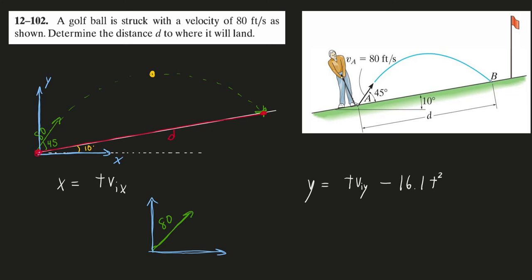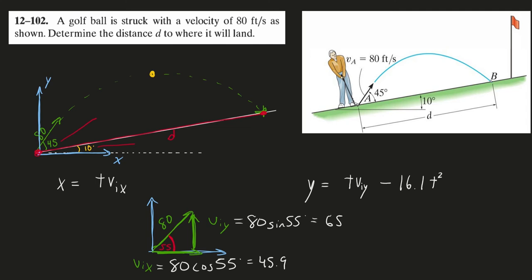Now let's figure out the x and y components of our initial velocity vector. We need the angle from the initial velocity vector to our x-axis, which is 45 plus 10, giving us 55 degrees. So the x-component of initial velocity is 80 times cosine 55, and the initial y-component is 80 times sine 55 — giving us 45.9 and 65.5, respectively.